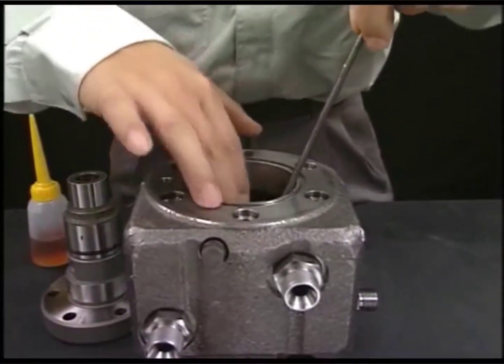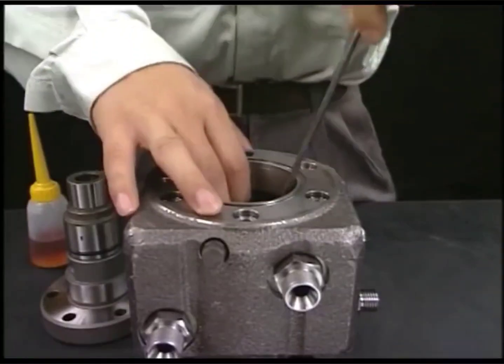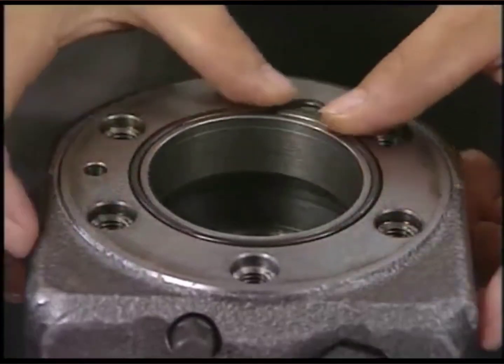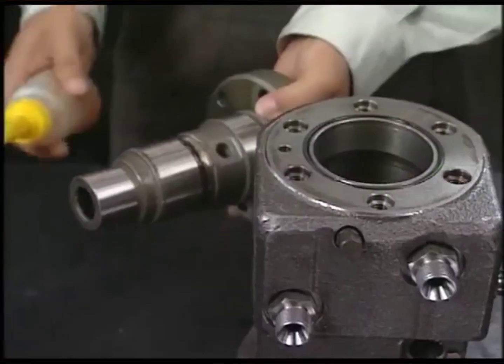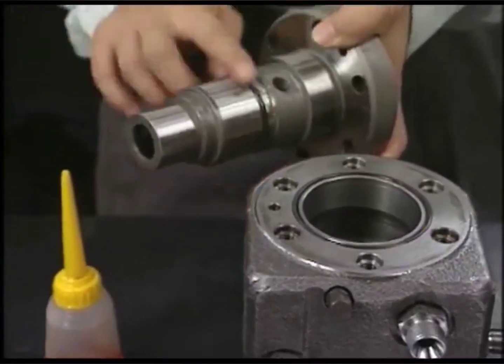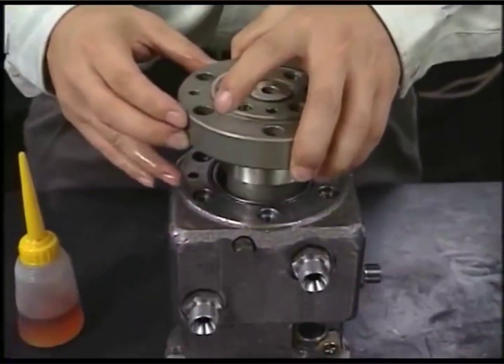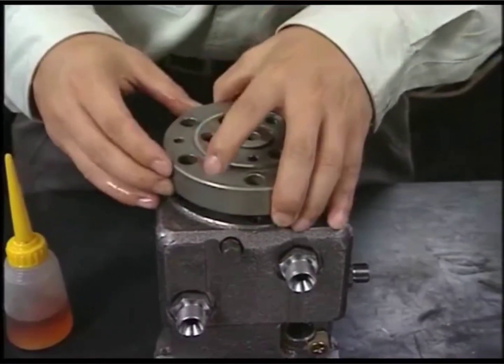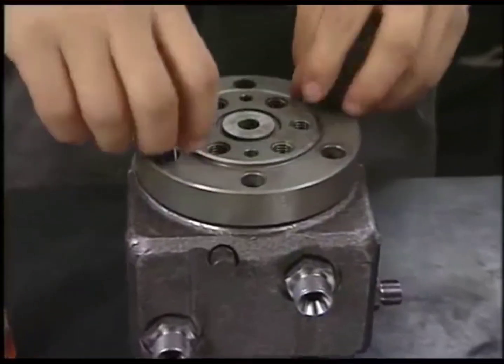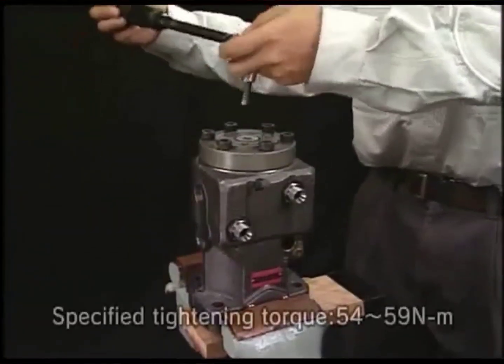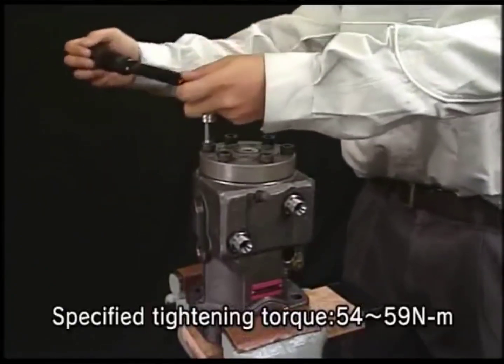Reassemble the fuel injection pump in inverse order for disassembly. Reassemble the barrel body. Tighten the bolts of barrel guard and of delivery valve evenly in three steps by the specified torque.